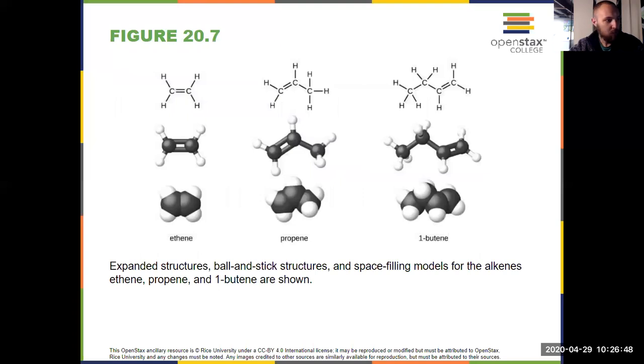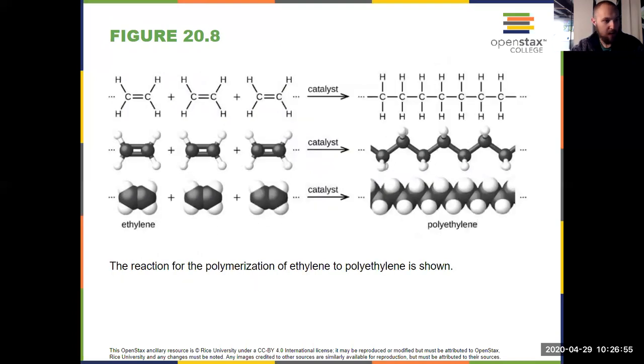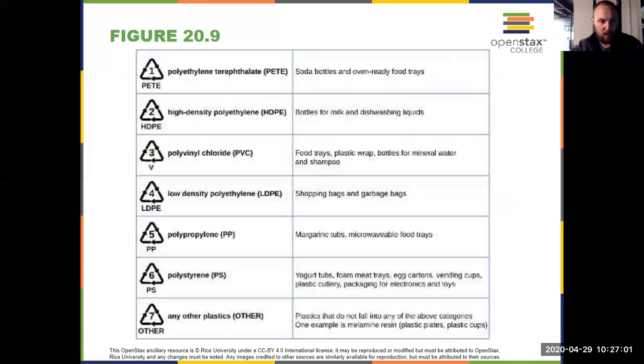Here's an example of a couple of alkenes. We've got ethene, propene, and 1-butene. And here's how those polymerization reactions look, which you can see is done quite a bit in different plastics.